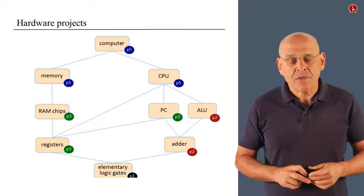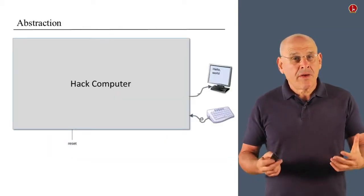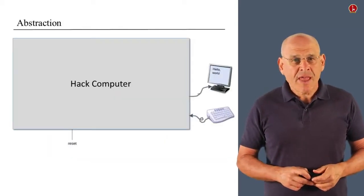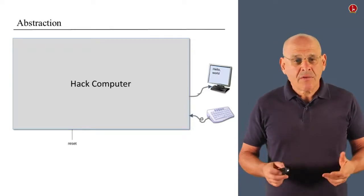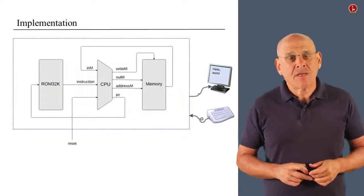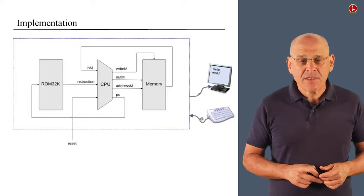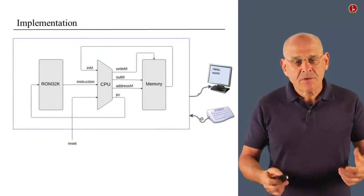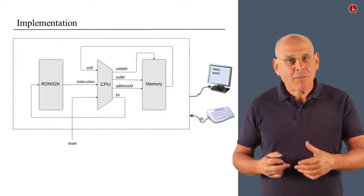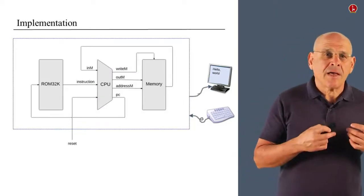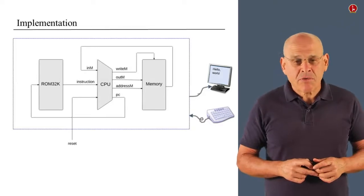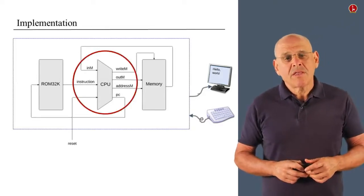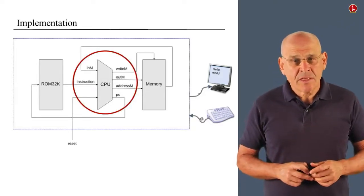So that's what we'll do in project five. So here is the abstraction of the HACK computer. And here is also the implementation that we discussed in the previous units. And we see that the architecture is based on a CPU, a data memory unit, and an instruction memory unit, which we call the ROM.